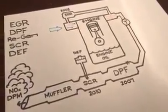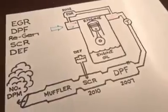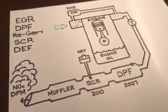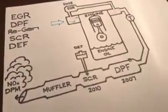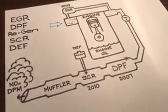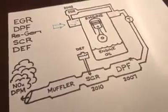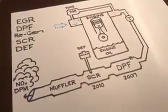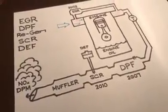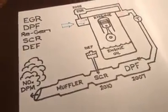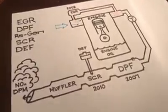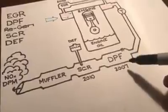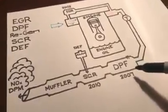It says hey, this filter is starting to get clogged, it needs a regen. So it will send a regen request through the dash to the driver. If the driver ignores that, which the driver can, you can actually hit a button to say cancel regen, and if the driver keeps doing that, the DPF will become clogged to a point where a regen no longer will fix it.